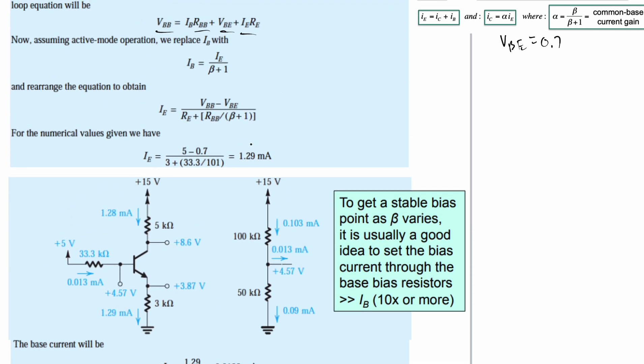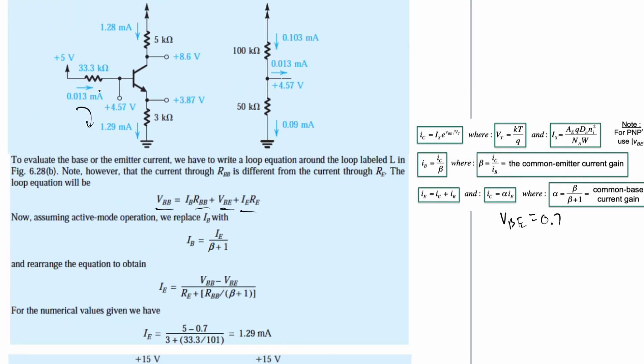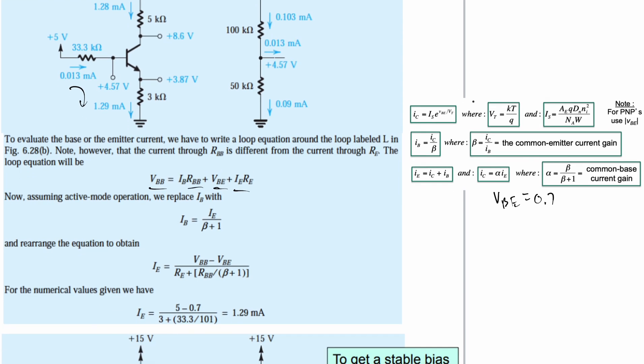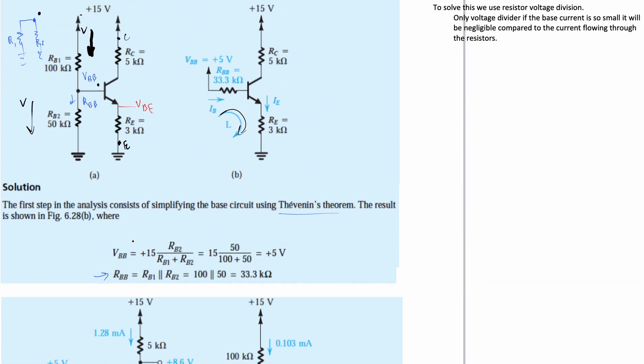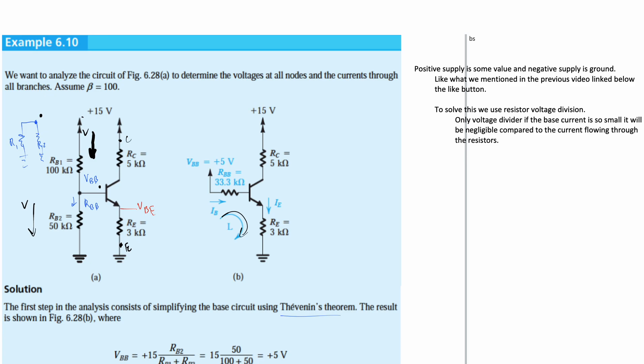So again, we would just find these values after we find the initial left part. We would plug it into the equations, and then we would try to solve each of the nodes and the currents flowing through here. And that's how we would look at our 6.10, which is analyzing the circuit and determining the voltages at all nodes and currents through the branches.